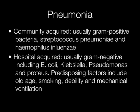Community-acquired pneumonia is usually caused by gram-positive bacteria such as Streptococcus pneumoniae and Haemophilus influenzae. Hospital-acquired pneumonia is usually caused by gram-negative organisms such as E. coli, Klebsiella, Pseudomonas and Proteus. Predisposing factors include old age, smoking, debility and mechanical ventilation.